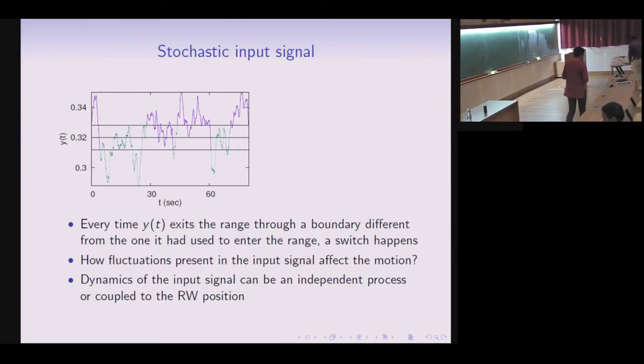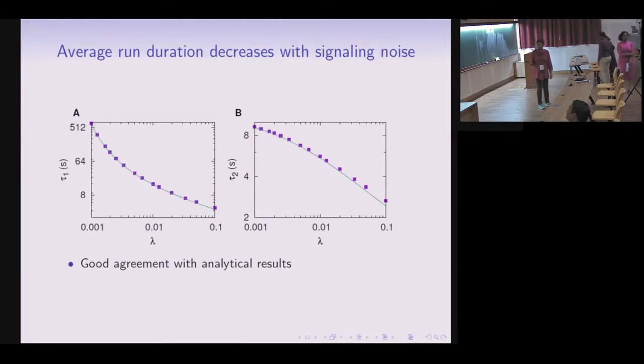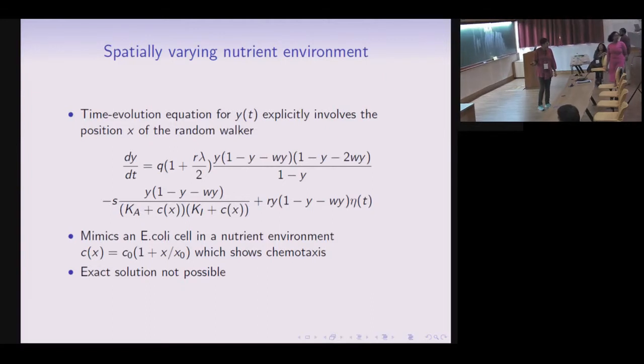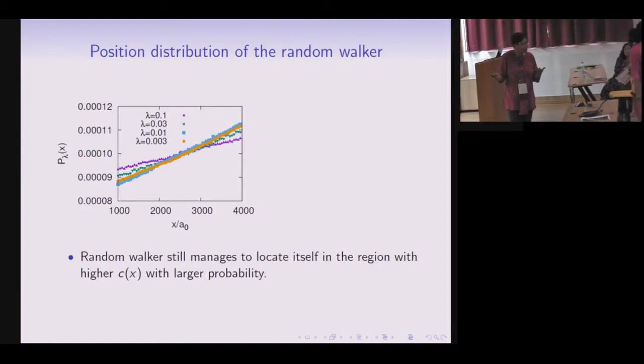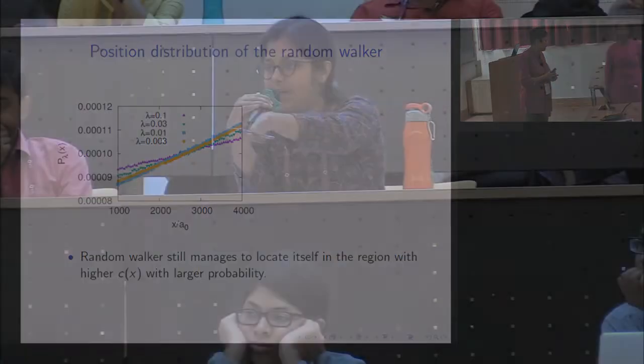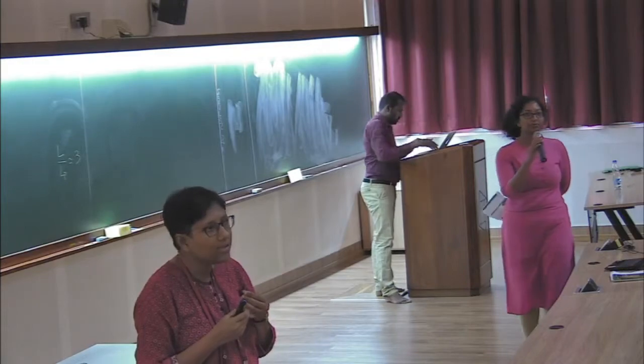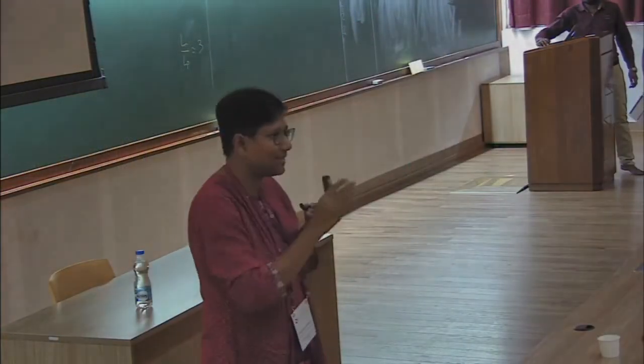Q&A: Have you thought about coupling this to a spatial model incorporating chemotaxis and a spatial gradient? Yes — that is exactly the second scenario. When the signal dynamics includes c(x), the nutrient concentration, even this simple model shows chemotactic behavior: the cell is present with larger probability where there is more food. For E. coli, the mechanism is that finding more nutrient encourages continued running toward a good region, while decreasing nutrient concentration triggers tumbling. This coupling of spatial nutrient variation to signal dynamics is included in our model.